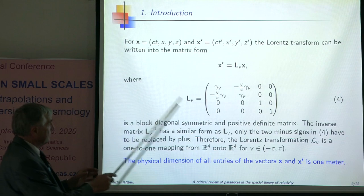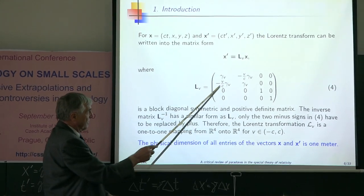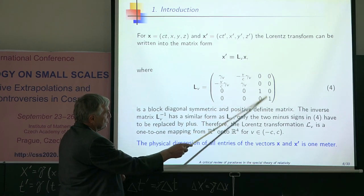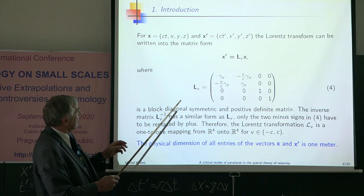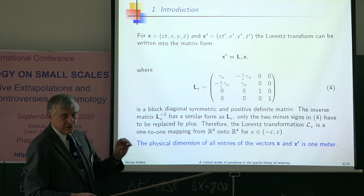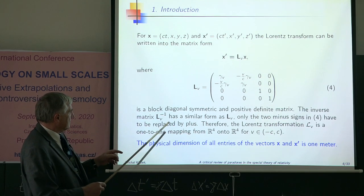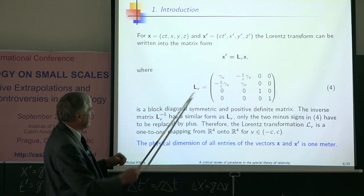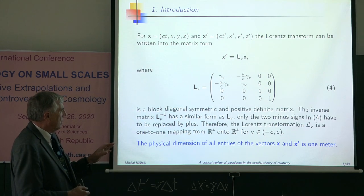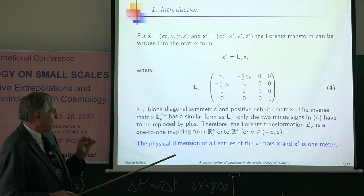Lorentz transformation can be written in this form, where this corresponds to x, this corresponds to time, and these two correspond to y and z axes. Here, instead of t, I included c because then you measure in meters. Every component is measured in meters. The inverse Lorentz transformation has a similar form. You only put here plus. It is very easy to check. Lorentz transformation is a one-to-one mapping from four-dimensional space into four-dimensional space.